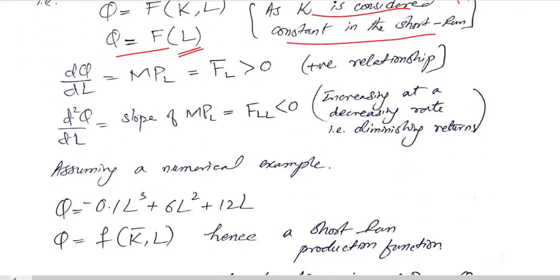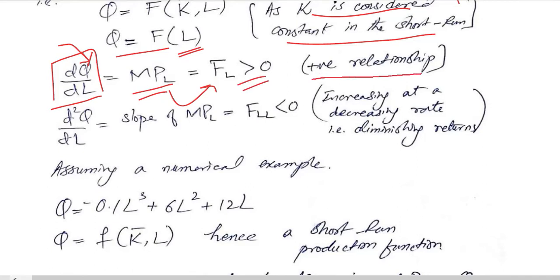A critical value here is the marginal product of labor, which we can calculate simply by taking the derivative of the production function with respect to labor. We can also write it as F_L, since it is the derivative with respect to labor, and it is greater than 0, showing a positive relationship.